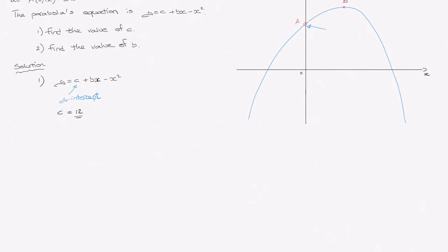So I can go ahead and say that c is equal to 12. That's the y-intercept of the curve. So at this stage, we can already go ahead and say y equals 12 plus bx minus x squared. That's our first part done.